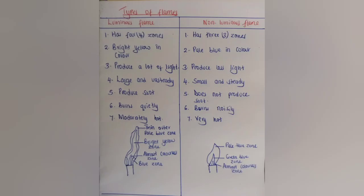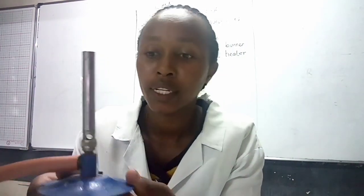There are two types of flame given by the Bunsen burner. The Bunsen burner has three parts: the chimney, the collar containing the air hole which you can close or open depending on the type of flame you want, and the base which has a gas inlet connected to a rubber tubing.